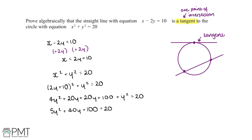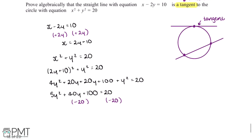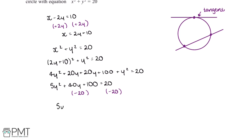As we can see, we've formed a quadratic equation here. In order to solve this, we'll need to make it equal to 0. So we minus 20 from both sides, and this gives us 5y squared plus 40y plus 80 is equal to 0.